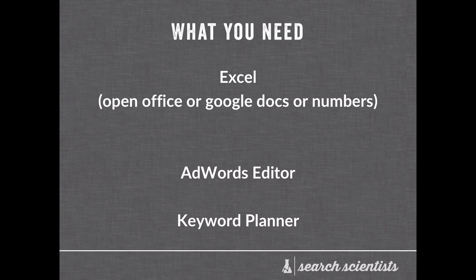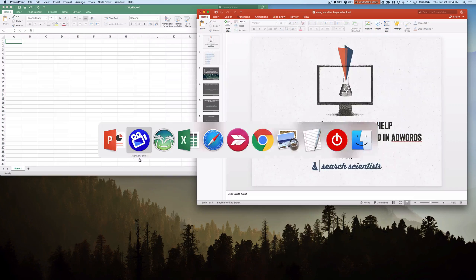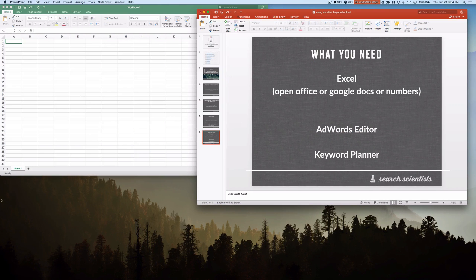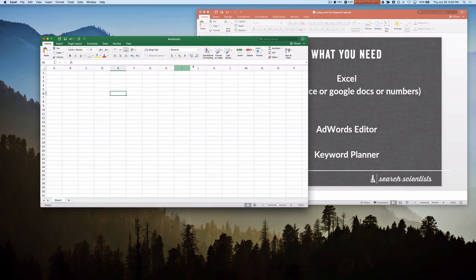So what you're going to need is Excel — and you can use OpenOffice, Google Docs, or Numbers. You're going to need AdWords Editor and a place to get keywords. I put down Keyword Planner here because it is probably the most likely place where you will get keywords. We're not going to cover how to pick keywords in this video, but what we are going to do is actually look at a real account and drop in some data. So let's actually do this right now.